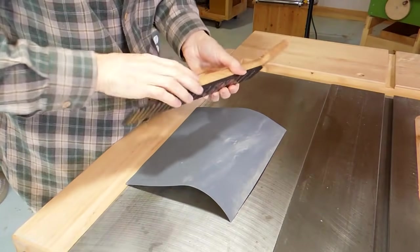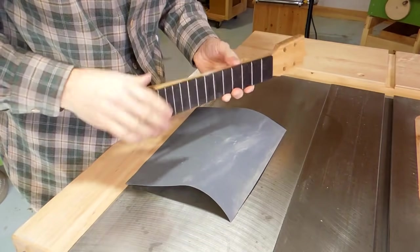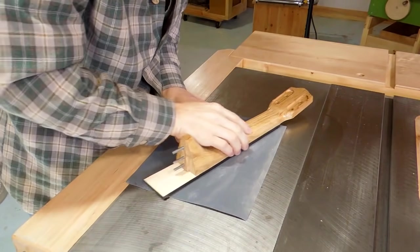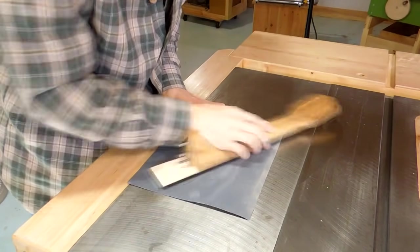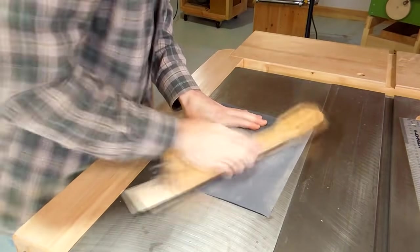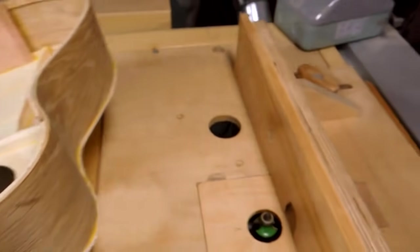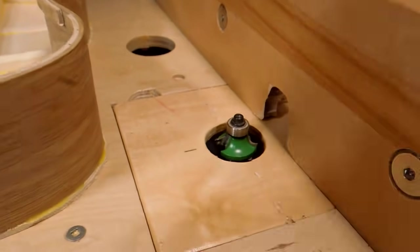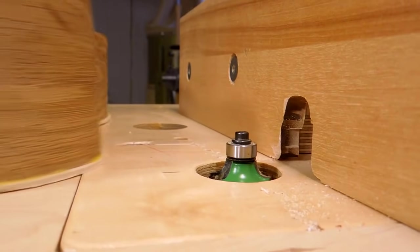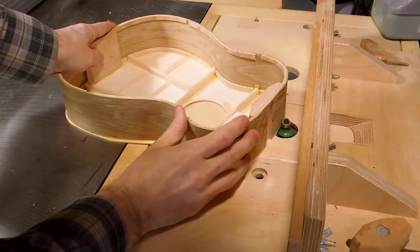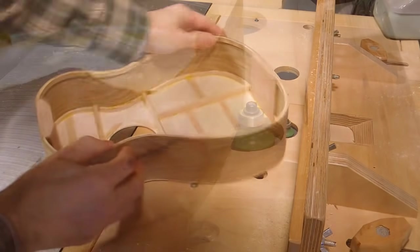And now I'm just sanding this a little bit to make sure all the frets are level. It's time to flush trim these edges. And I'm actually gonna use a quarter inch round over bit mostly sunken into the table.